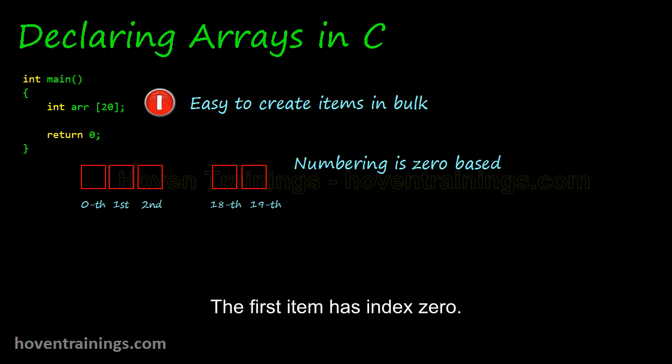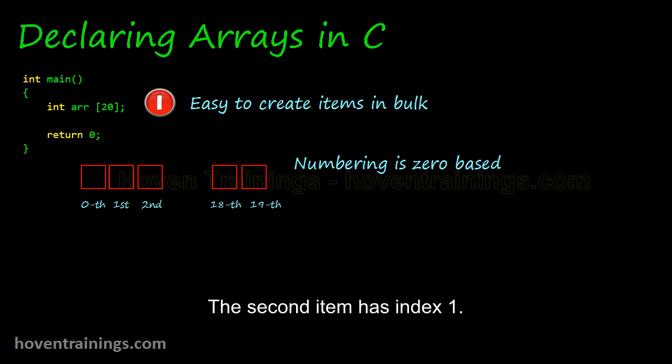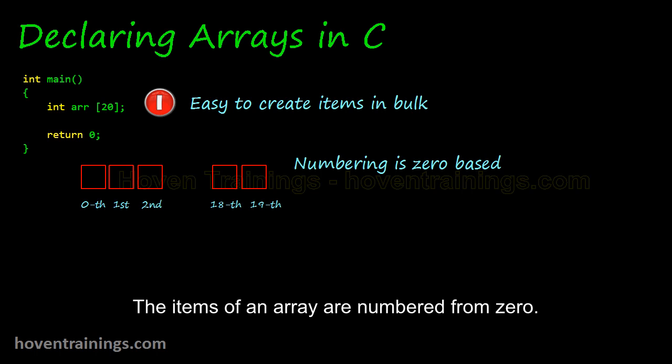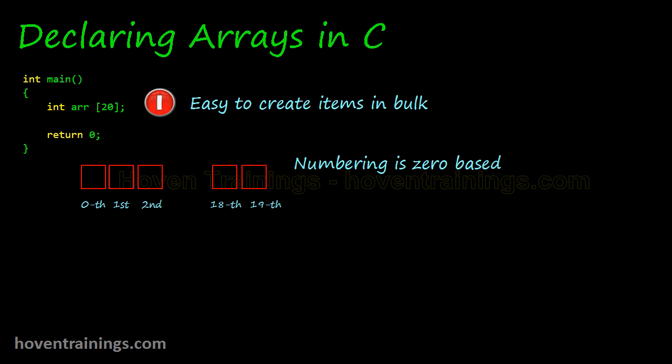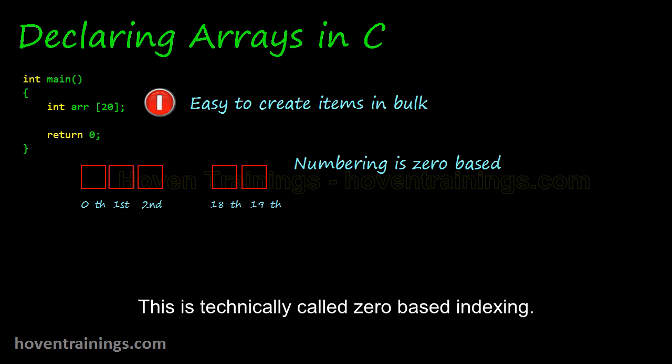The first item has index 0, and the second item has index 1. The items of an array are numbered from 0, which is technically called 0-based indexing.